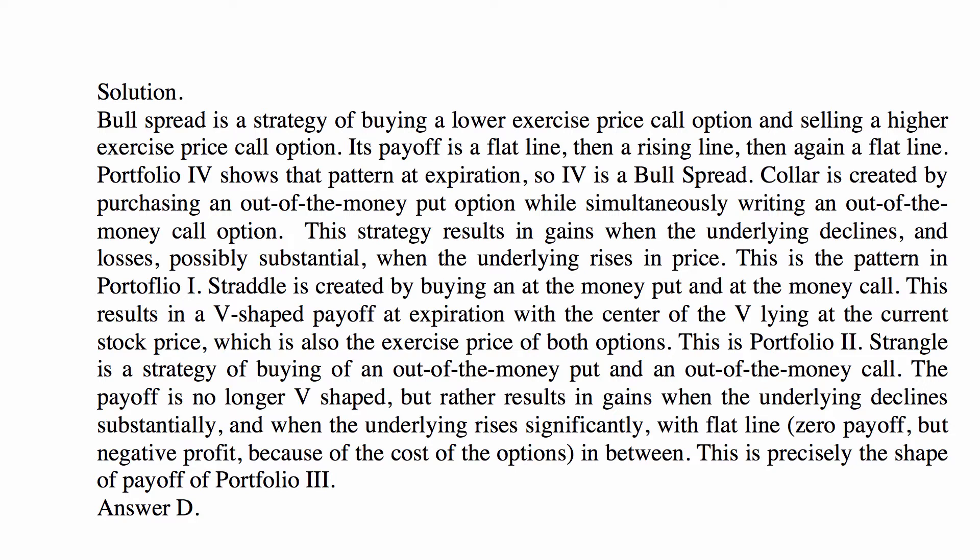A collar is created by purchasing an out-of-the-money put option while simultaneously writing an out-of-the-money call option. This gives gains when the underlying declines and losses when it rises — that is the pattern in Portfolio 1. A straddle is especially important because insurance companies hold a short straddle in interest rates. It is created by buying an at-the-money put and an at-the-money call, resulting in a V-shaped payoff at expiration — that is Portfolio 2.